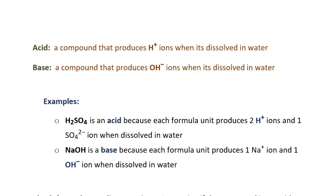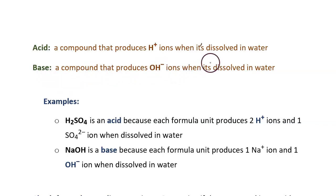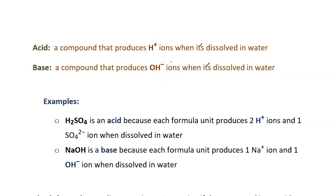We were just discussing acids, so let's define what an acid is. An acid is a compound that produces H+ ions when it's dissolved in water. There's another type of compound that can be contrasted with acids — those are bases. A base is a compound that produces OH- ions when it's dissolved in water. So an acid produces hydrogen ions; a base produces hydroxide ions.